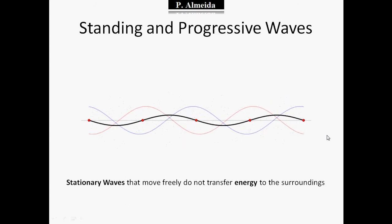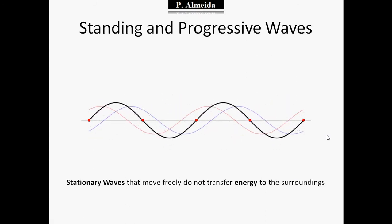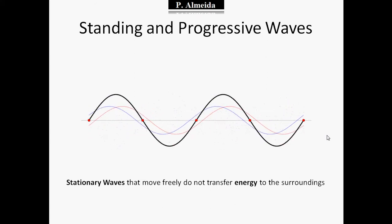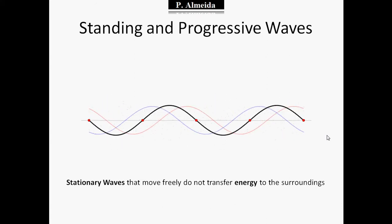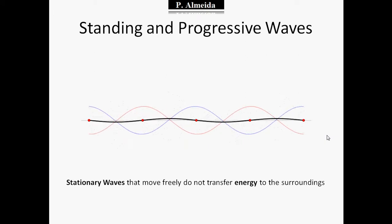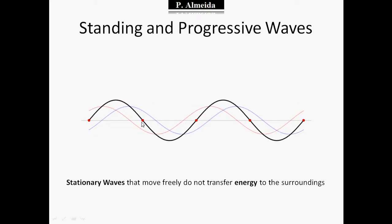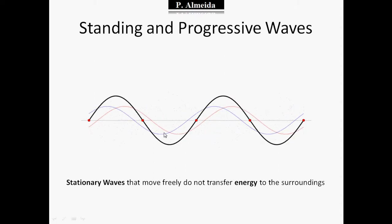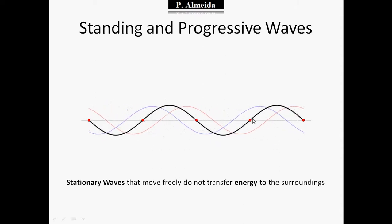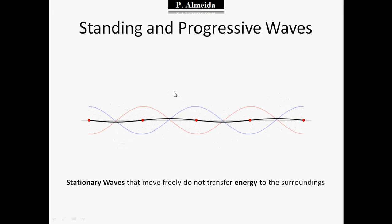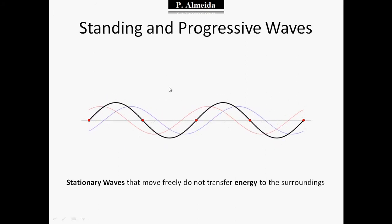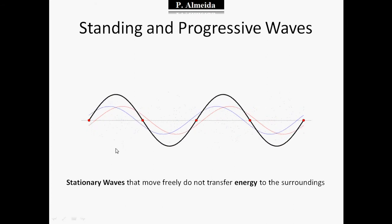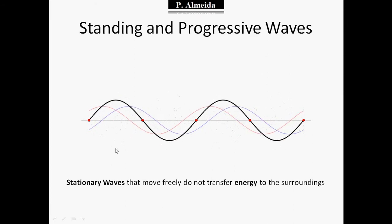Here I have two progressing waves — the red and the blue one — and as you can see, they are interfering and superimposing with each other. Sometimes I have points where the waves cancel out; at all times they are canceling out in these points. I'm going to call them nodes.